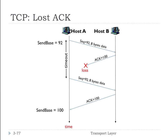This diagram illustrates what happens when an acknowledgement is lost. Host A sends a packet with sequence number 92 that's 8 bytes long. Host B receives it and sends back acknowledgement number 100 (92 + 8). That acknowledgement is lost. After a timeout, the sender resends sequence number 92. Host B receives it again and resends ACK 100. The sender updates SendBase from 92 to 100 when this acknowledgement is received. This is how TCP handles a lost acknowledgement.